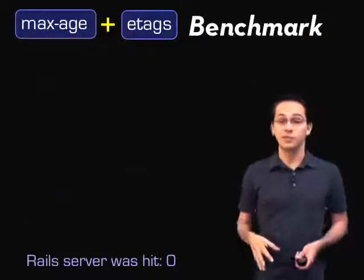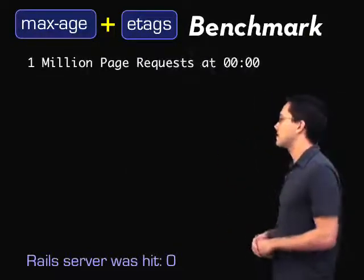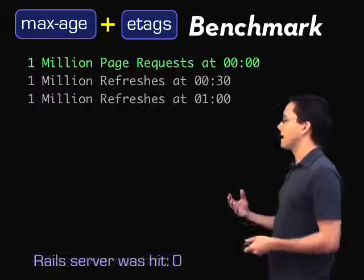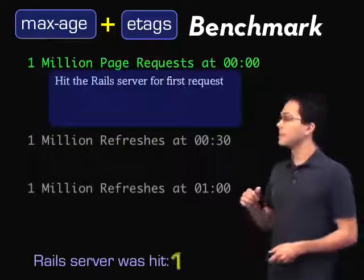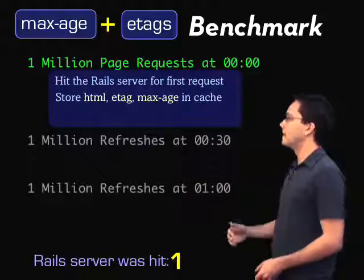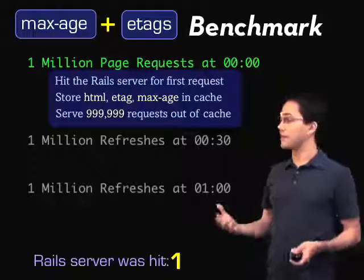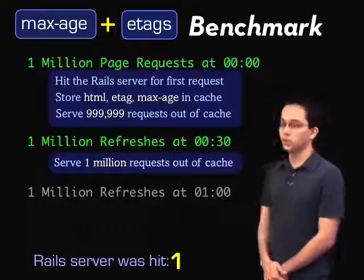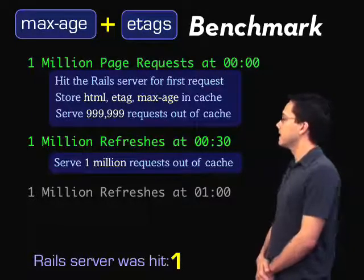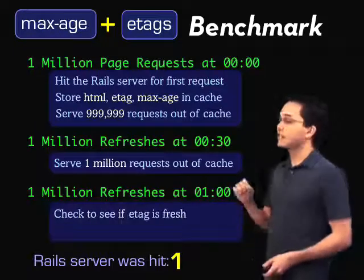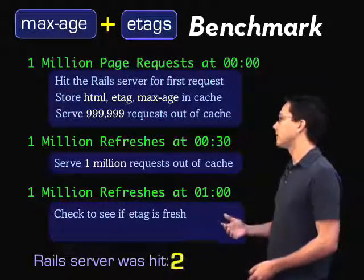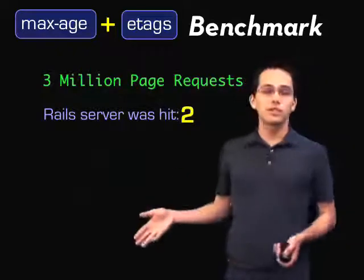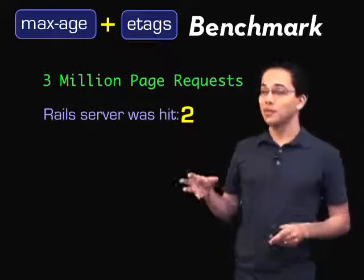Let's look at how scalable this really is. Say we have a million page requests at zero seconds, a million at 30 seconds, and another million at a minute. At zero seconds, the first request goes through the Rails server, gets served up and stored in the reverse proxy, and the remaining requests are served from cache. At 30 seconds, one million requests are served directly out of cache — the server isn't hit at all. At one minute, it checks if the ETag is fresh and serves the rest from cache. So with three million requests, our Rails server was only hit two times.